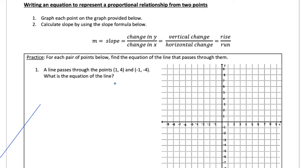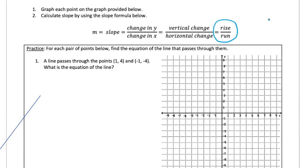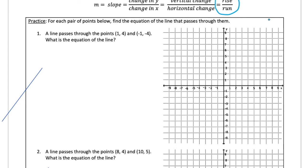If you're given directions to put points on the graph and find the slope and figure out the equation, we want to check where the points are on the graph and then figure out slope by calculating the change in y over the change in x — rise over run. In this first example: for each pair of points below, find the equation of the line that passes through them.